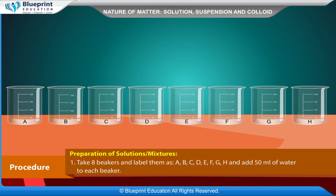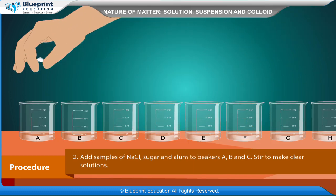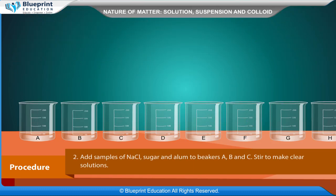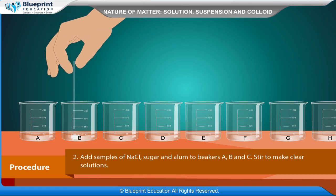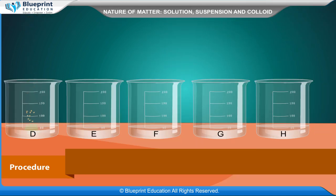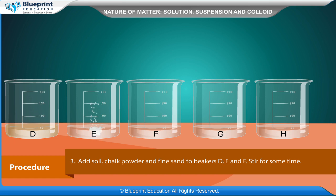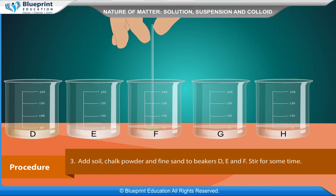Procedure — Preparation of solutions or mixtures: Take 8 beakers and label them as A, B, C, D, E, F, G, H and add 50 ml of water to each beaker. Add samples of NaCl, sugar and alum to beakers A, B and C; stir to make clear solutions. Add soil, chalk powder and fine sand to beakers D, E and F; stir for some time.